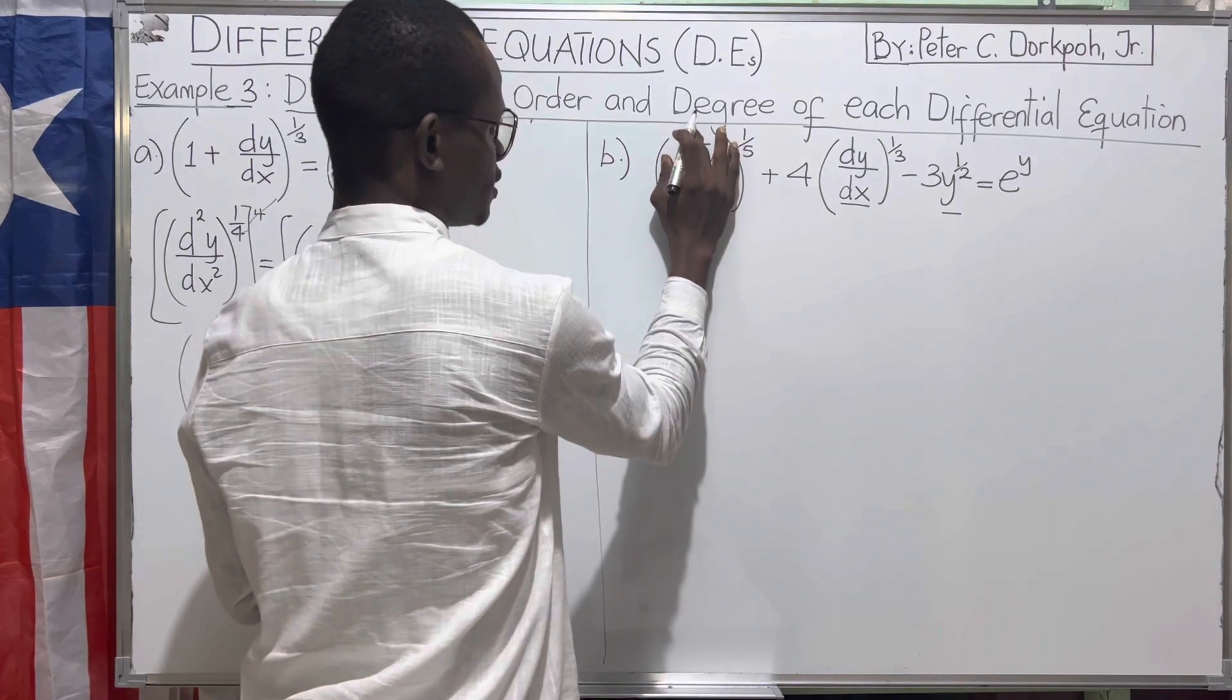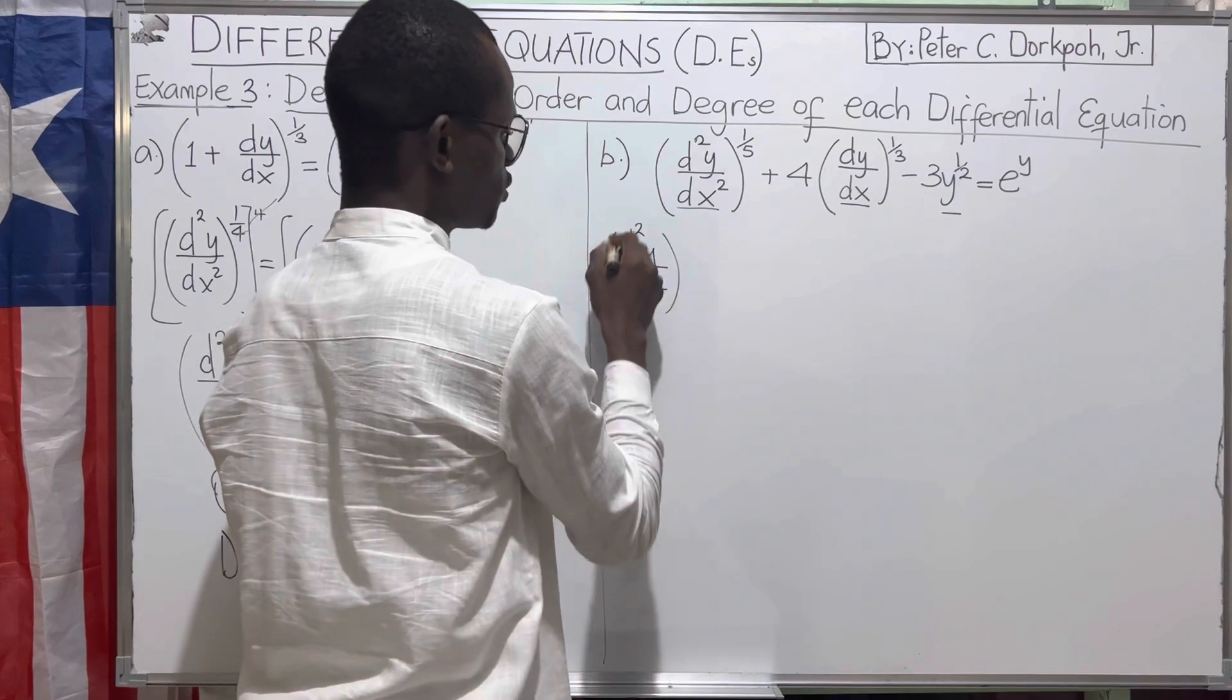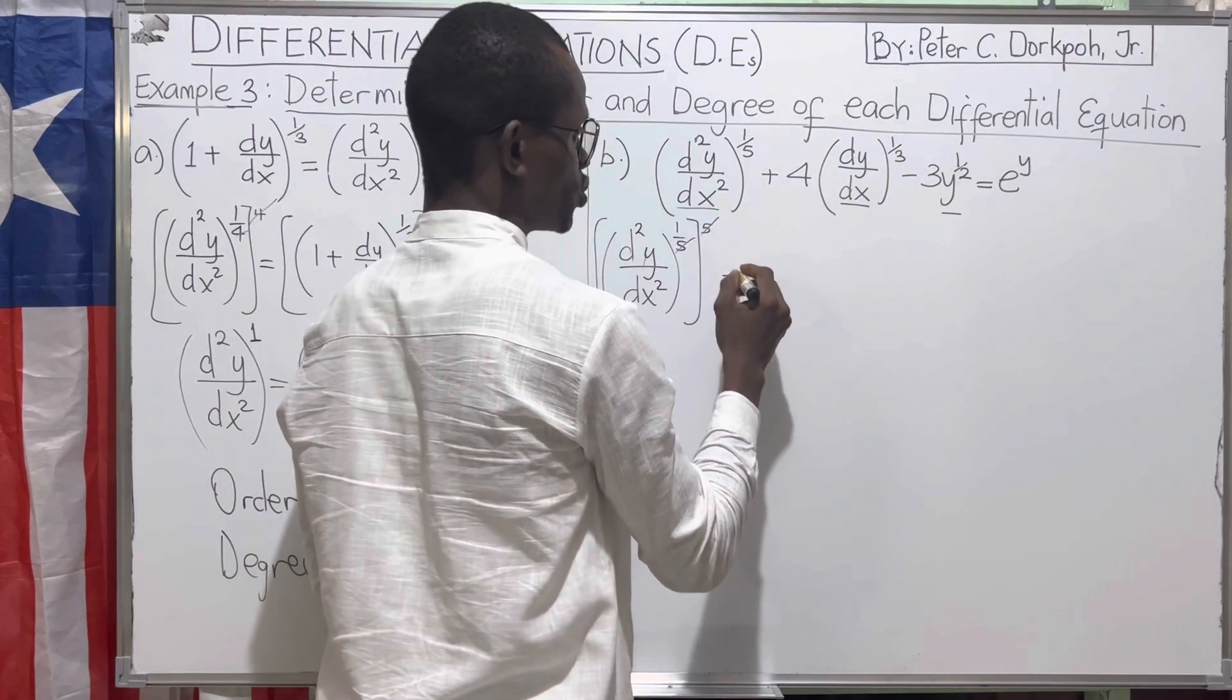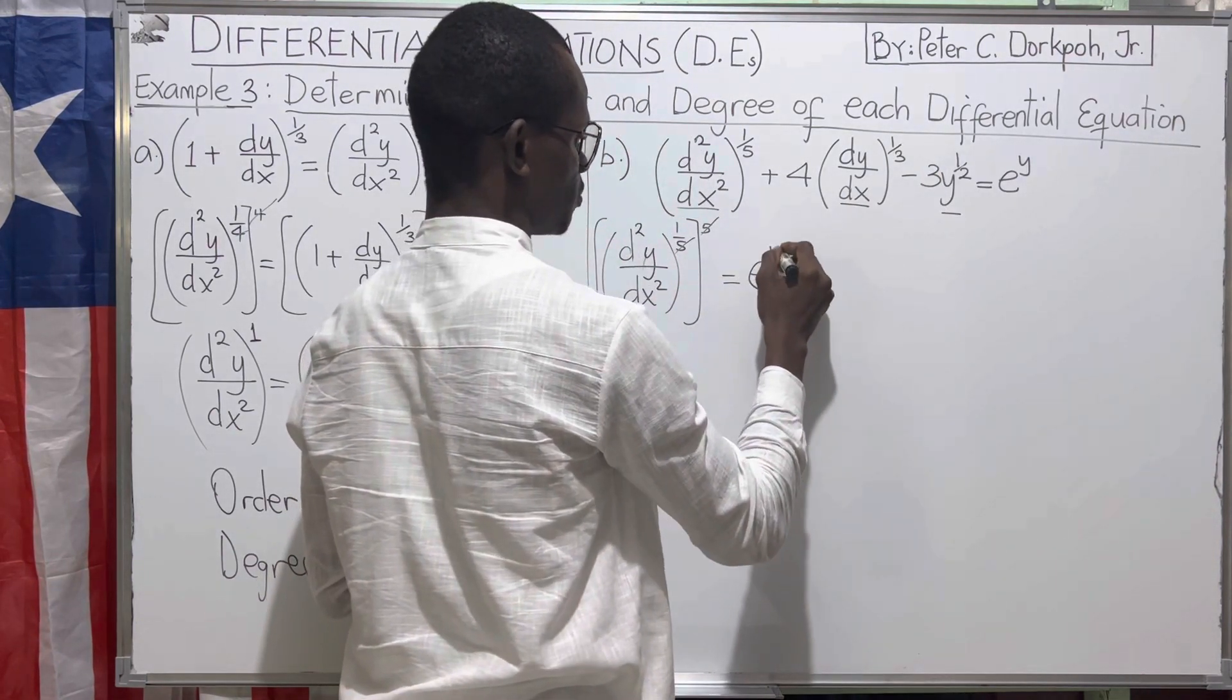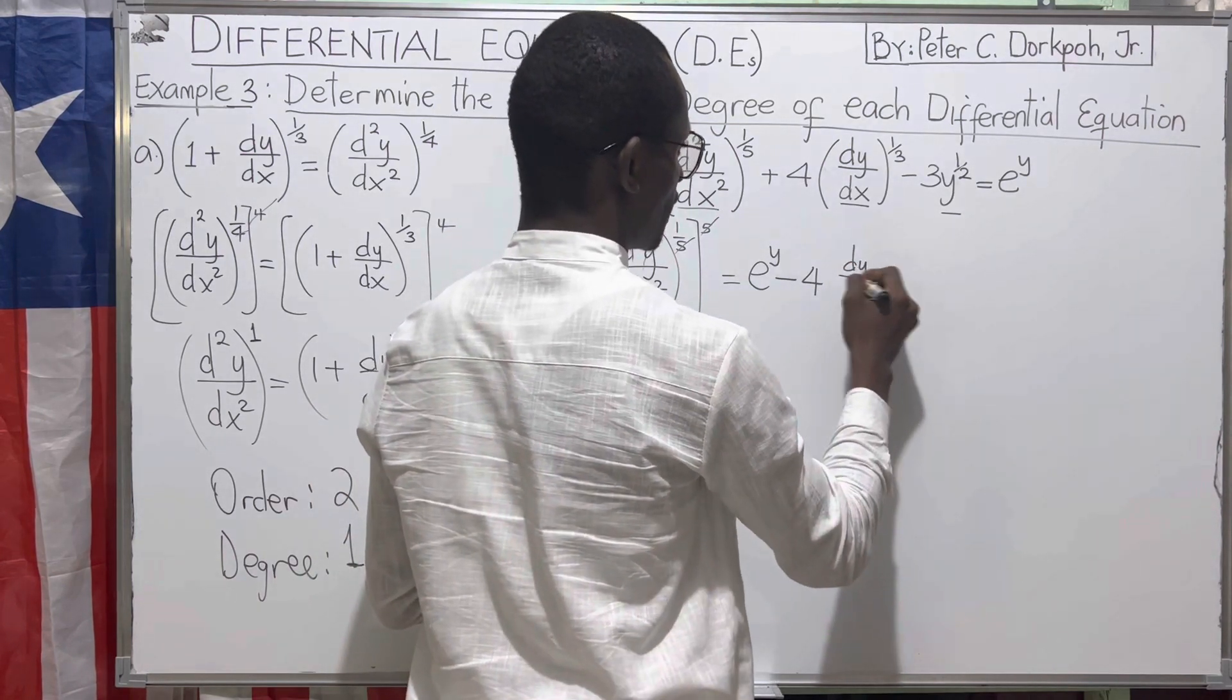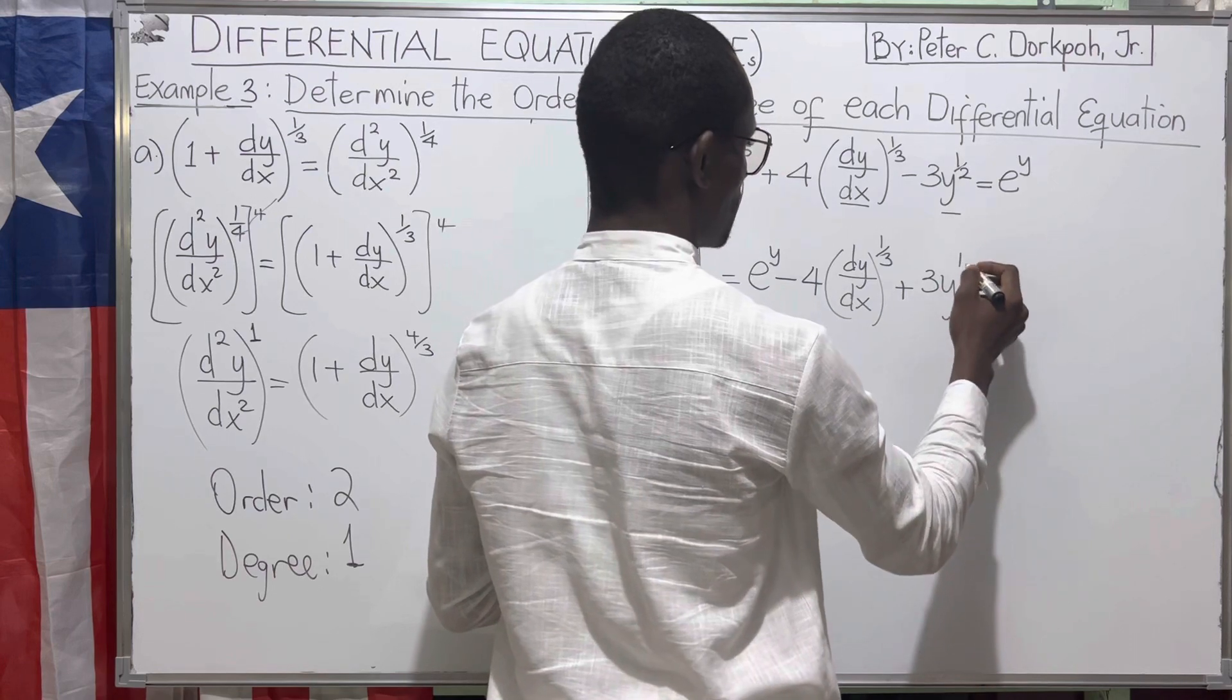We have d²y/dx² raised to the power one over five. If we just raise this one over five to five, this five will cancel. Then we ensure that all of these terms go across the equal sign. We have e raised to the power y. We send this four across, it becomes minus four. dy/dx raised to the power one over three. This minus goes across, it becomes positive 3y raised to the power one over two.